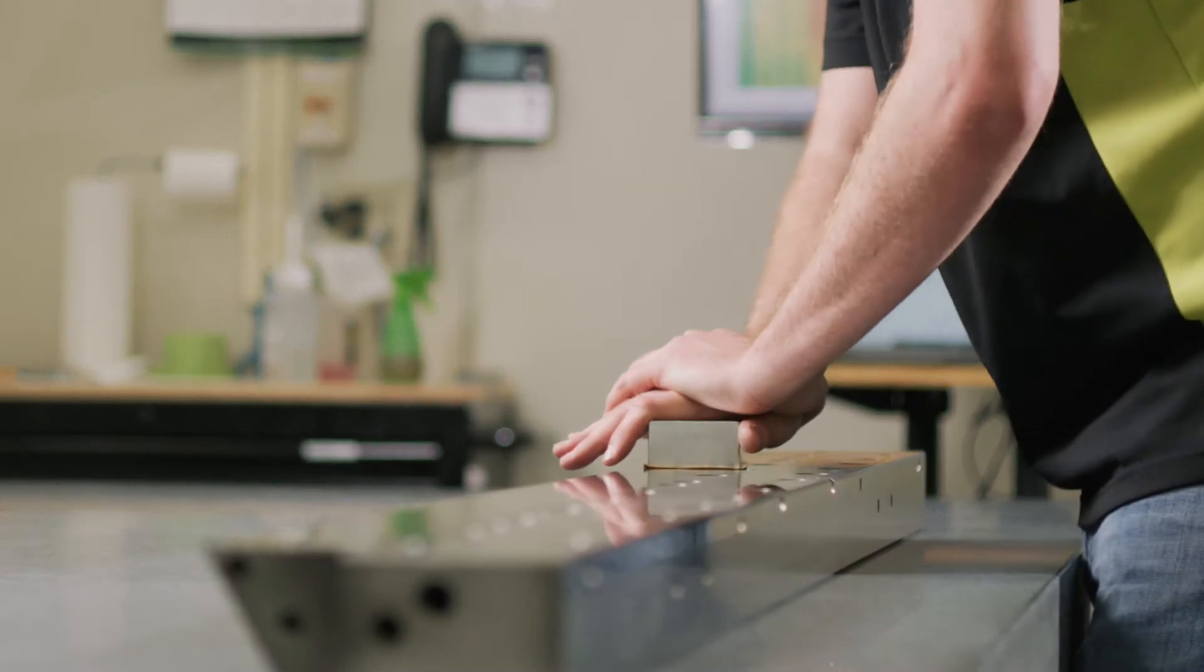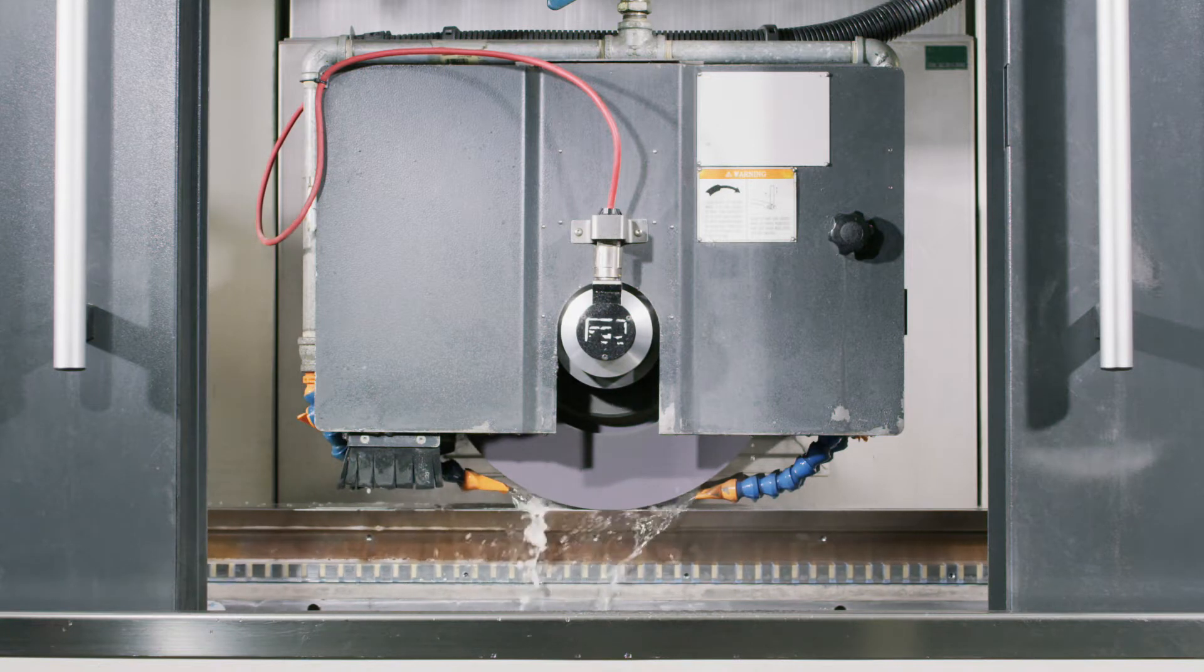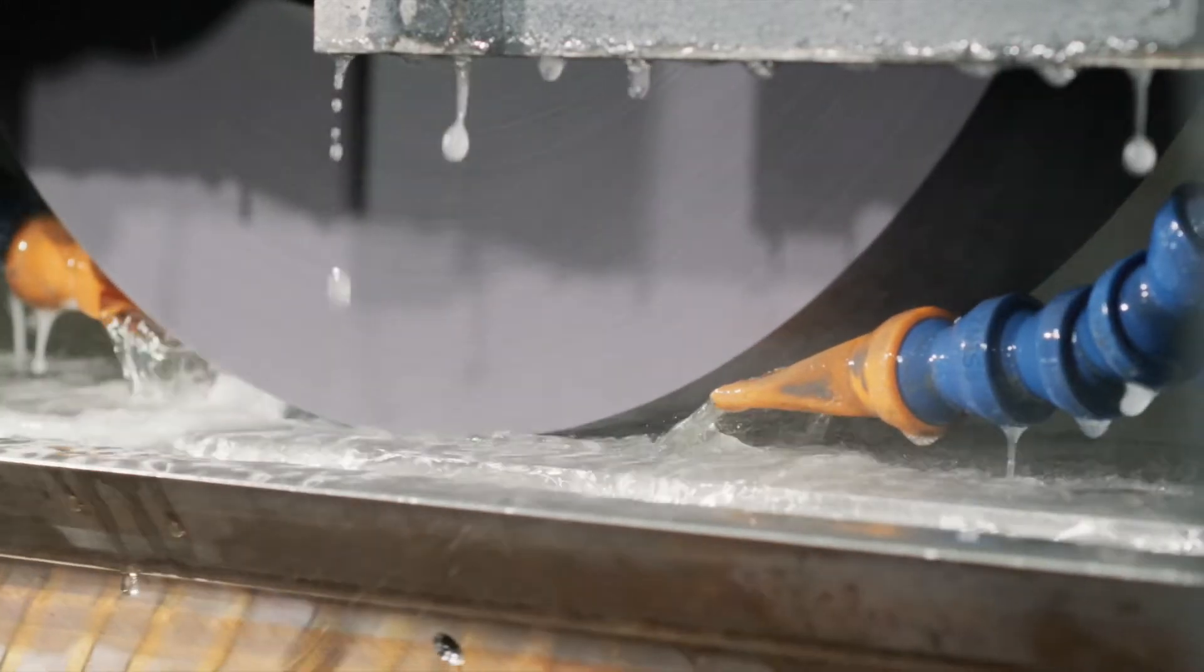If you could imagine looking at a television screen and you can see maybe in this one little area something seems just a little bit off, that could be attributed to a coating defect. We need to provide the most precise tooling so that customers don't have coating defects.